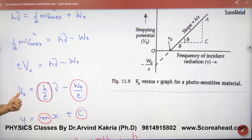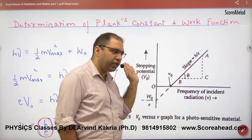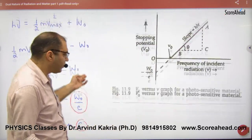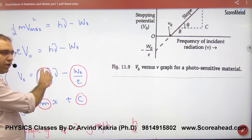This is V₀ and this is frequency. If I plot a graph, V₀ and frequency - V₀ is y-axis and frequency is x. What will it be? Slope.